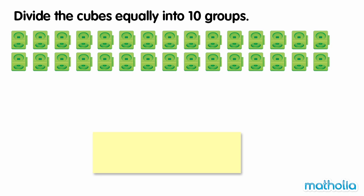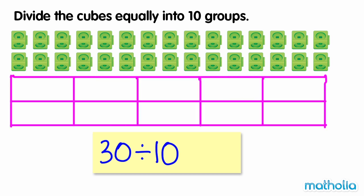Divide the cubes equally into 10 groups. There are 30 cubes. We need to divide the cubes equally into 10 groups. Let's draw 10 empty groups, then place one cube into each group until we have used up all of the cubes.